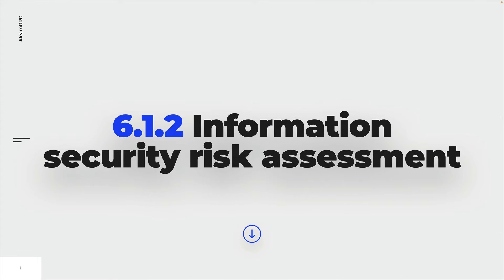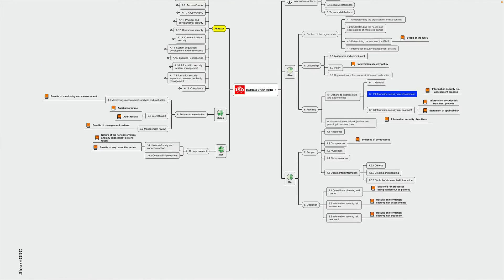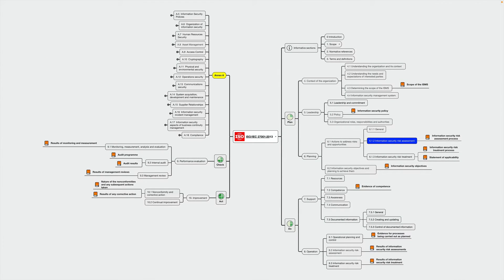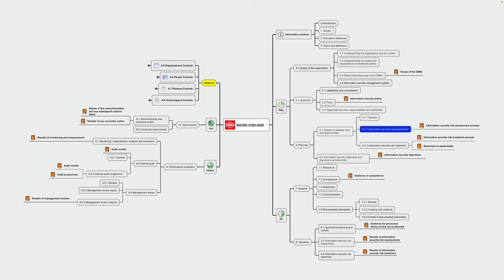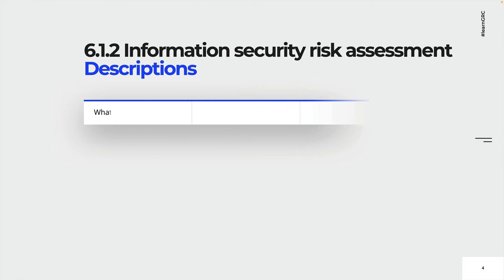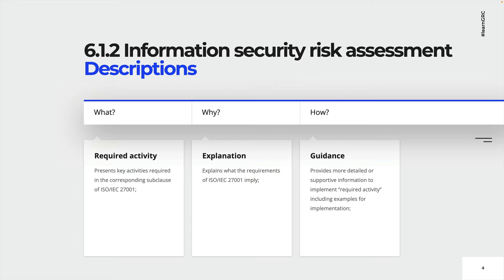In this lecture, we are going to cover all the requirements of subclause 6.1.2. ISO 27001 wants organizations to define a risk assessment and a risk treatment process. 6.1.2 is about risk assessments. Chapter 6 still follows the same structure as before. In the next couple of minutes, we are going to have a look at this subclause and learn what the requirements are, what these requirements imply, and how to implement the required activities.